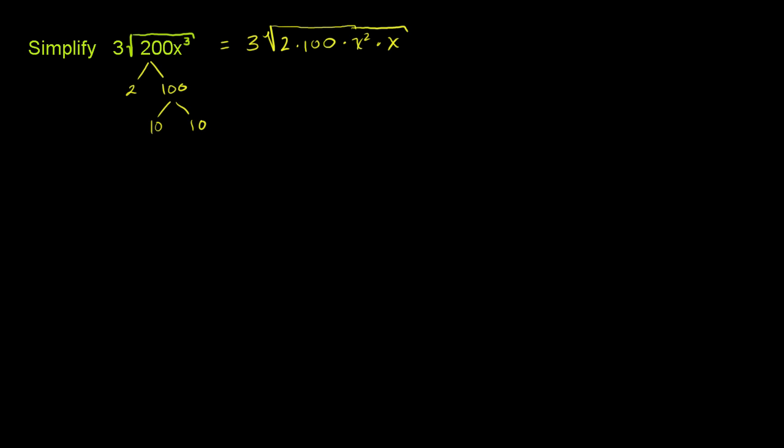Let me stretch the radical sign. So the x squared times x, that is x to the third. And then the 200 is 2 times 100.